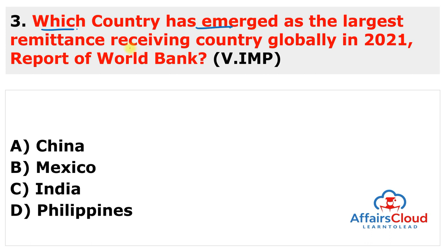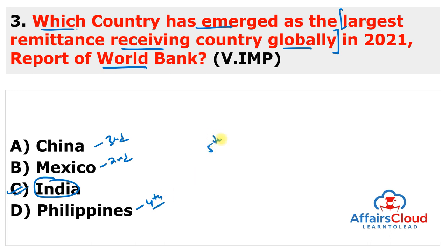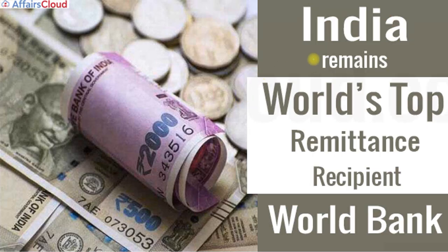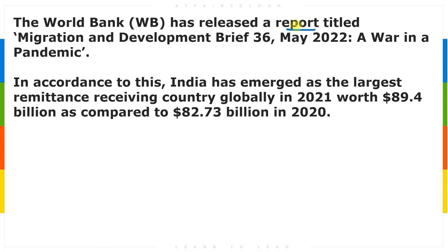Next question: which country emerged as the largest remittance receiving country globally in 2021 according to a World Bank report? The answer is India. Second rank goes to Mexico, third to China, fourth to Philippines, and fifth to Egypt. The World Bank released a report titled 'Migration and Development Brief 36, May 2022: A War in a Pandemic,' covering implications of the Ukraine crisis and COVID-19 on global governance of migration and remittance flow.